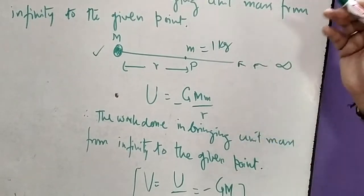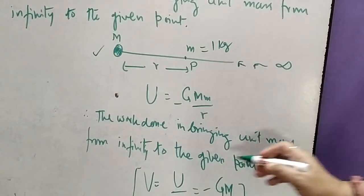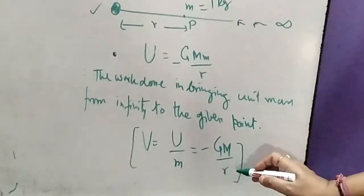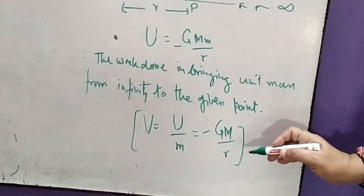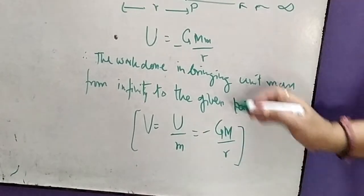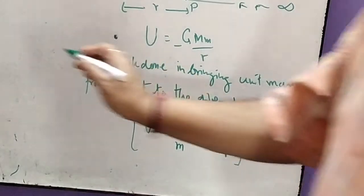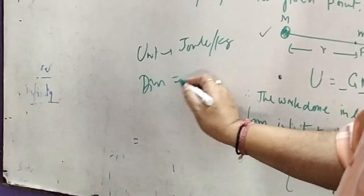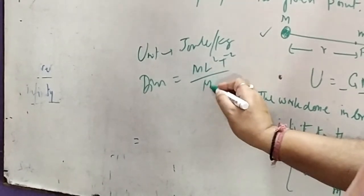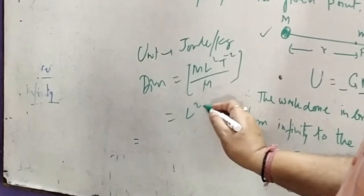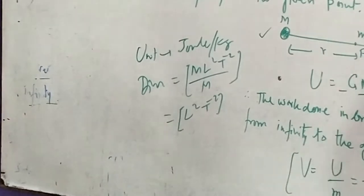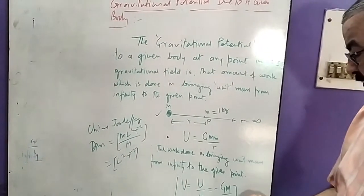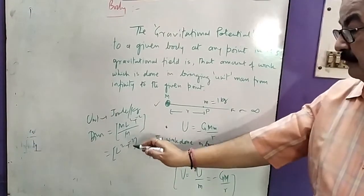The gravitational potential will be minus G·M·m upon R, and then we divide by the unit mass. Capital U upon small m equals minus G·M upon R. This is the gravitational potential due to the given mass. The unit of gravitational potential is joule per kg, because we divide energy by mass. The dimension is L²·T⁻².